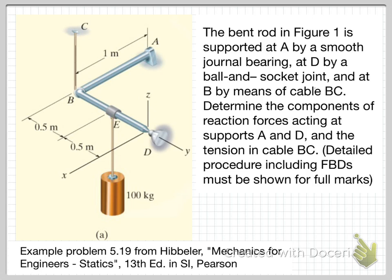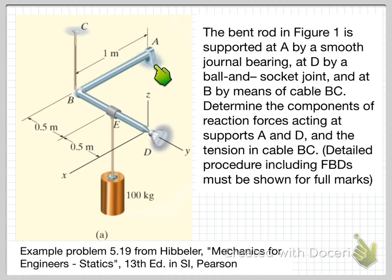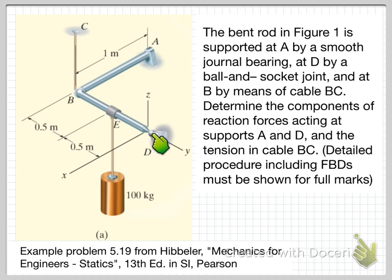The bent rod is supported at A by a smooth journal bearing. That'll give us some information about the forces and moments that occur at this point. Secondly, at point D we have a ball and socket joint, which again gives us information about the forces and moments at that connection. It's also supported at B by means of a cable BC.